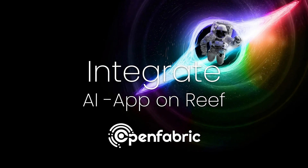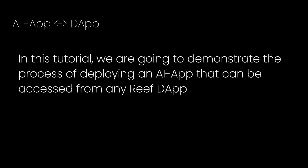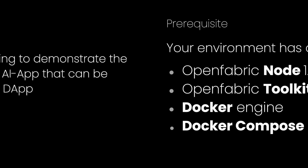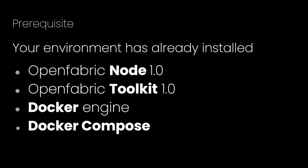Hello, in this tutorial we are going to demonstrate the process of deploying an AI app that can be accessed from any RIF DAP. In order to start, you need to have the following things installed on your own environment: you need access to an OpenFabric node, you need the toolkit running locally, and of course you need Docker and Docker Compose engines running.